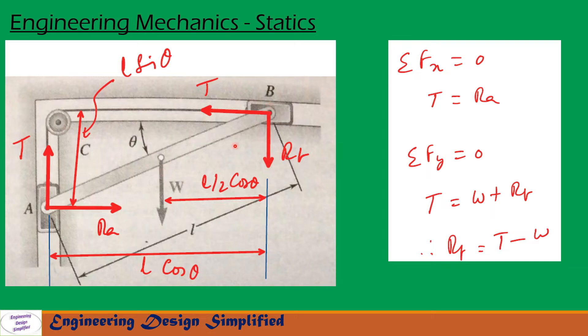Now from this diagram, let us resolve forces along x and y directions. First, let us see x direction. Sigma Fx = 0. Along x direction we have this force T and this reaction RA. So T = RA.